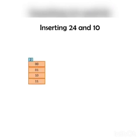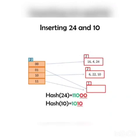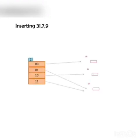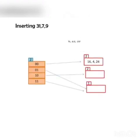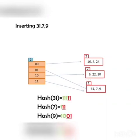Next, inserting 24 and 10: both are hashed based on directories with 00 and 10 respectively. Then inserting 31, 7, and 9: all of these elements have either 01 or 11 in their LSBs, so they are mapped to the buckets pointed by 01 and 11.